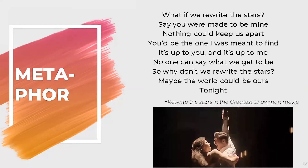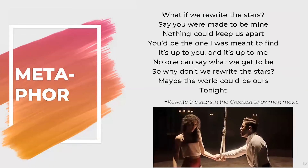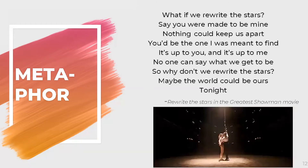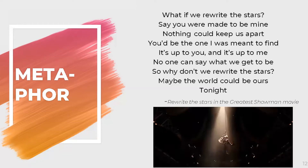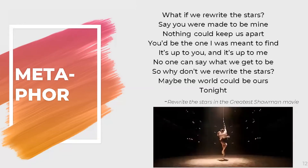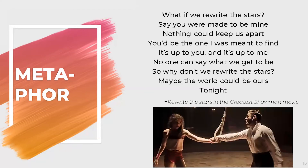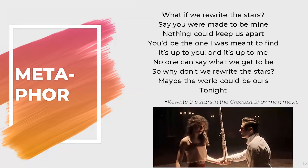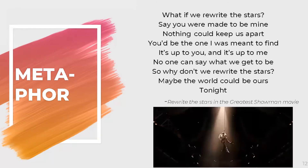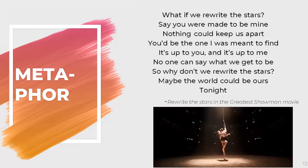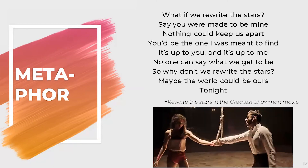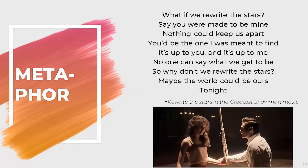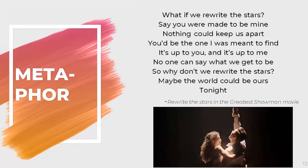Another example is from 'Rewrite the Stars' in The Greatest Showman: 'What if we rewrite the stars? Say you were made to be mine... it's up to you and it's up to me — no one can say what we get to be, so why don't we rewrite the stars?' Here, fate or destiny is compared to the stars. Most people believe their fate is written in the stars, so 'rewrite the stars' means the characters are challenging themselves to change their fate and prove that old belief wrong.